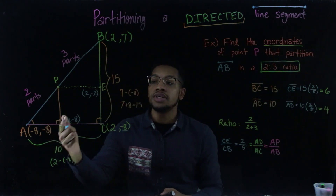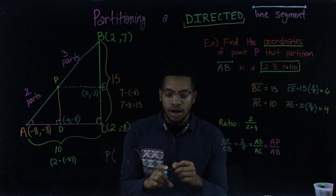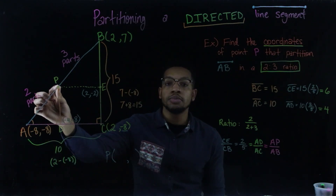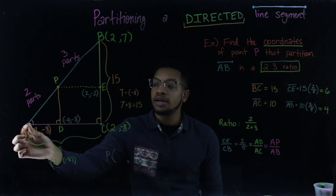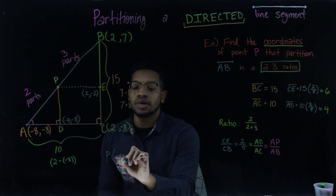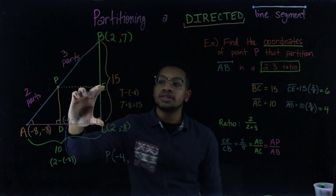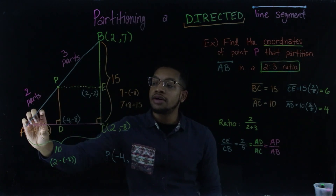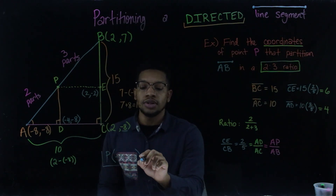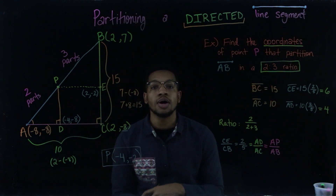Now that I have the coordinates of D and E, I can find the coordinates of point P. Think of it as starting at point A and moving over and up to get to point P. For the x-coordinate: A is at negative 8, go over 4, landing at negative 4. For the y-coordinate: starting at negative 8, go up 6, giving negative 8 plus 6 equals negative 2. So the coordinates of point P are negative 4, negative 2. Stick around for part 2 where I talk about how to generalize this and solve any partitioning problem.